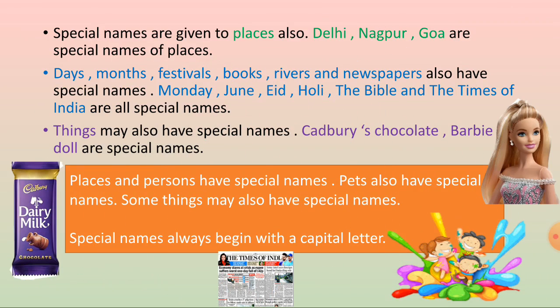Special names are given to places also — like Delhi, Nagpur, and Goa are special names of places. Days, months, festivals, books, rivers, and newspapers also have special names: Monday, June, Eid, Holi, The Bible, and The Times of India are all special names. Things may also have special names — Cadbury's Chocolate and Barbie Doll are special names of things.